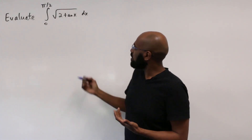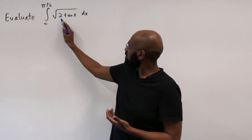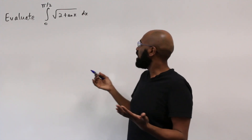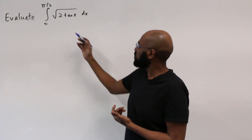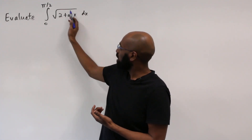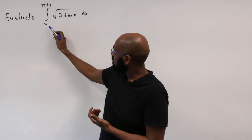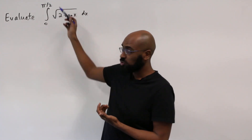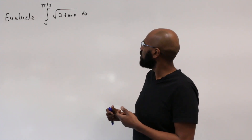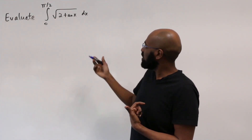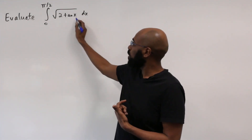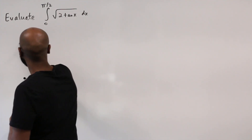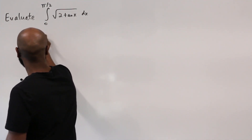A natural way to start is by making a substitution for what's inside of this square root. Since anything inside the square root has to be positive — which in this case it is, because tan x is positive between 0 and π/2 — we can substitute u² in for 2 tan x. So we'll let u² equal 2 tan x.